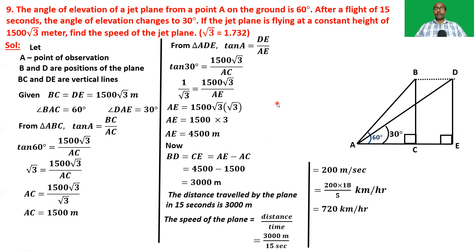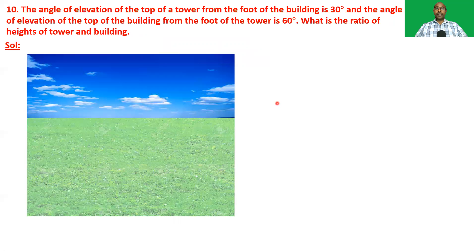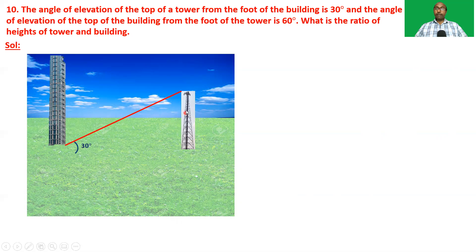It's a beautiful problem. Now the next problem: The angle of elevation of the top of the tower from the foot of the building is 30 degrees, and the angle of elevation of the top of the building from the foot of the tower is 60 degrees. What is the ratio of heights of tower and building? You have a building and a tower. The angle of elevation from the foot of the building to the top of the tower is 30 degrees, and from the foot of the tower to the top of the building is 60 degrees.